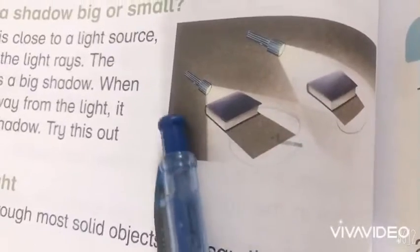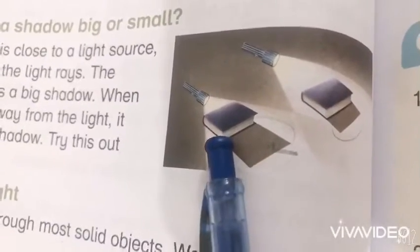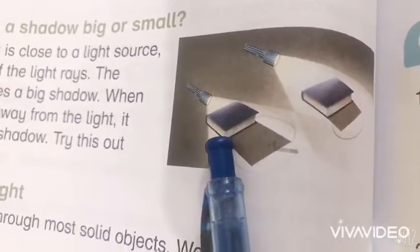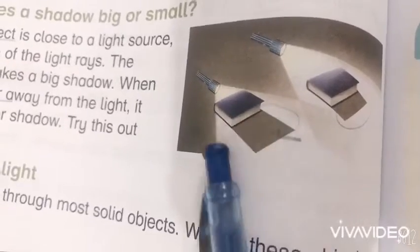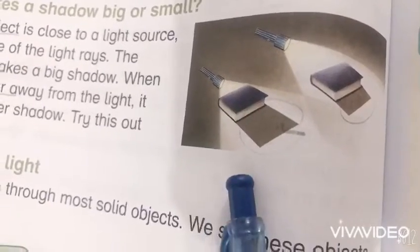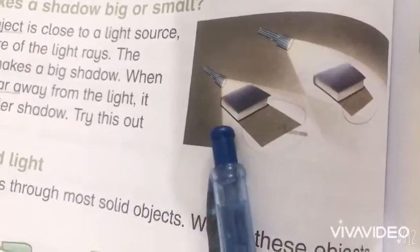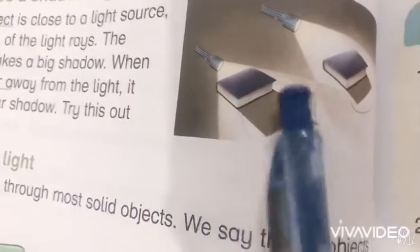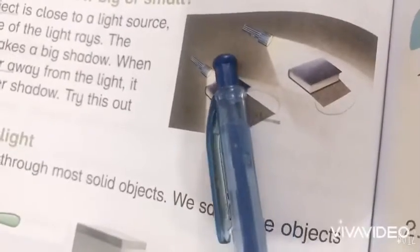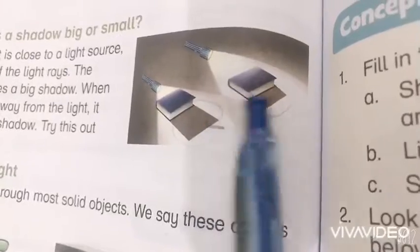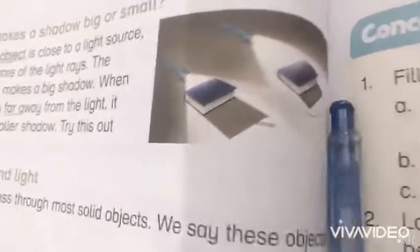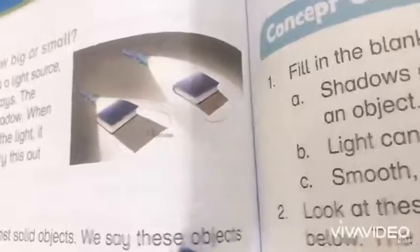As shown in the picture, when the object is close to the light, the shadow is big. If the light is far away, then it is a small shadow. This is what you have to try yourself.